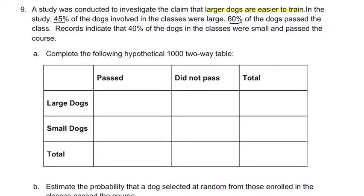60% of the dogs passed the class. Records indicate that 40% of the dogs in the classes were small and passed the course. Let's complete the following hypothetical 1,000 two-way table.